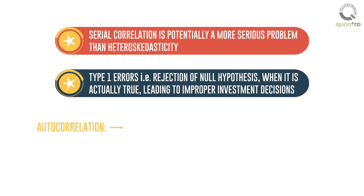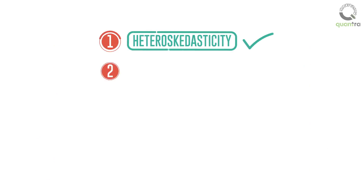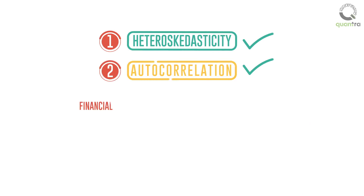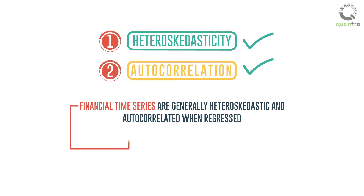Autocorrelation is detected using a Durbin-Watson statistic, and corrected by adjusting the standard error of coefficients using the Hansen method. It is important to study the terms heteroscedasticity and autocorrelation, as financial time series are generally heteroscedastic and autocorrelated when regressed.